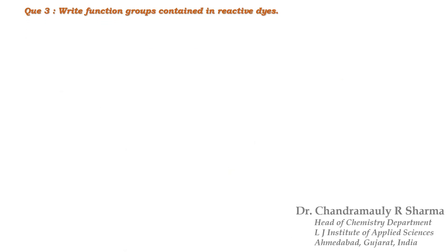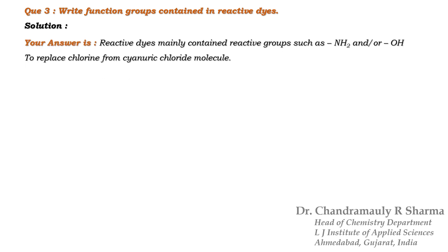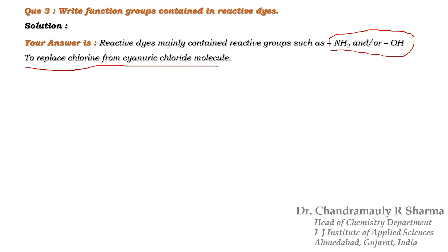Next question: Write the functional groups contained in reactive dyes. Reactive dyes mainly contain reactive groups such as NH2 or OH to replace chlorine from the cyanuric chloride molecule.